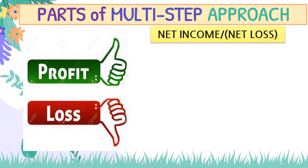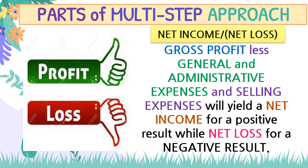The last part is net income and net loss. Gross profit less general and administrative expenses and selling expenses will yield a net income for a positive result, while a net loss for a negative result. So if the gross profit is higher than the expenses, that is net income; but if the gross profit is less than the expenses, that is net loss.